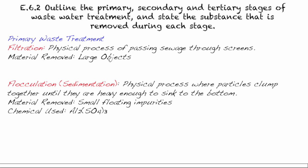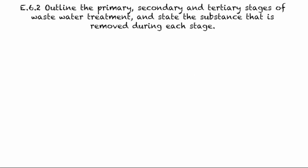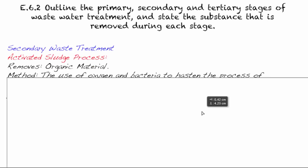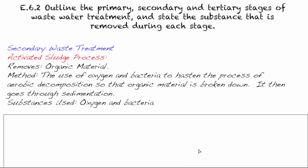So to summarize that, what we call this is the activated sludge process in secondary waste treatment. And our goal is to remove the organic material. And our method is to use oxygen and bacteria to hasten the process of aerobic decomposition, so that organic material is broken down. So we're making it faster. If you just left the water sit there on its own, it would do it, but by bubbling the air through, it's more efficient. So that's why we do that. And then goes to sedimentation, which is where you can add the alum or other materials. Substances used to do this are oxygen and bacteria.